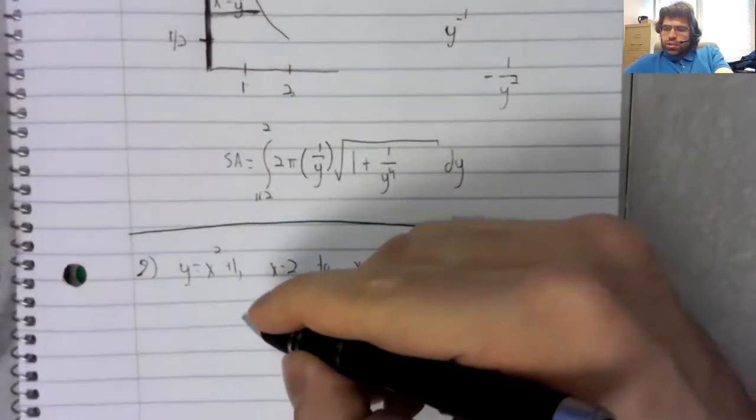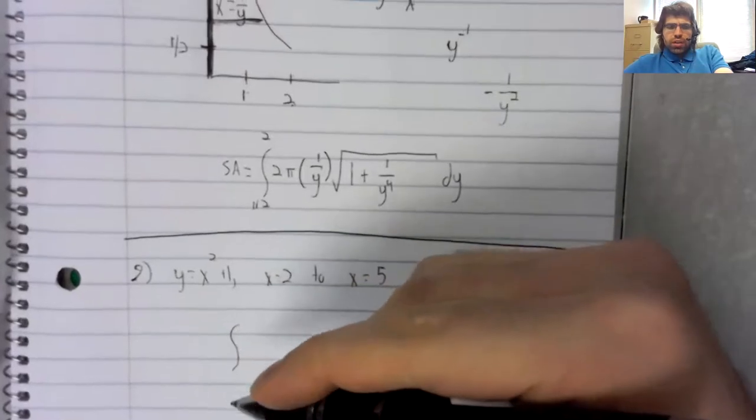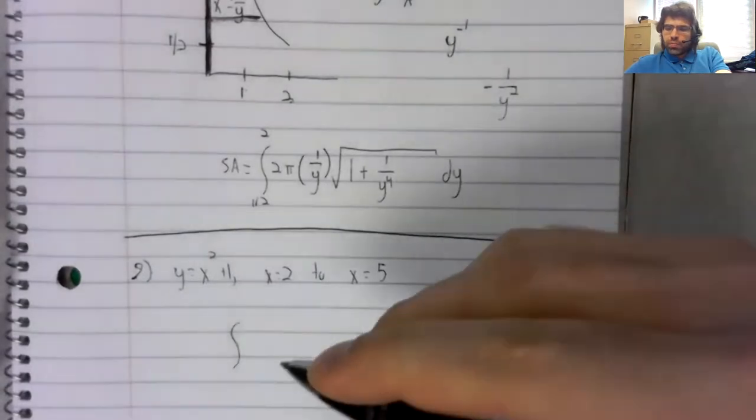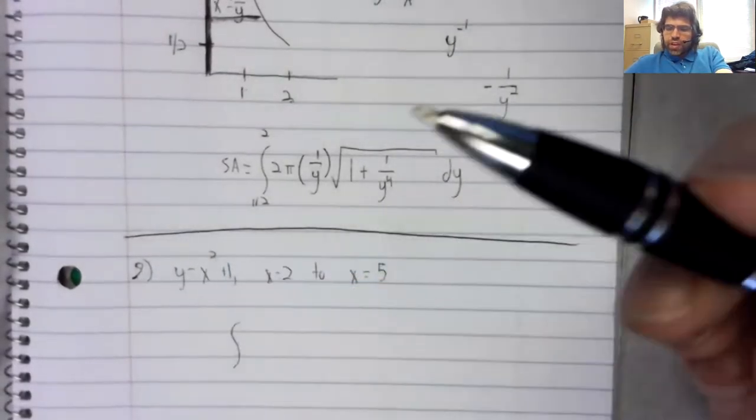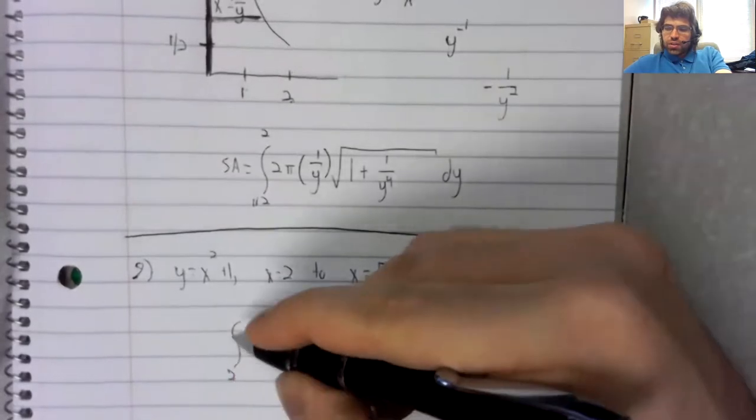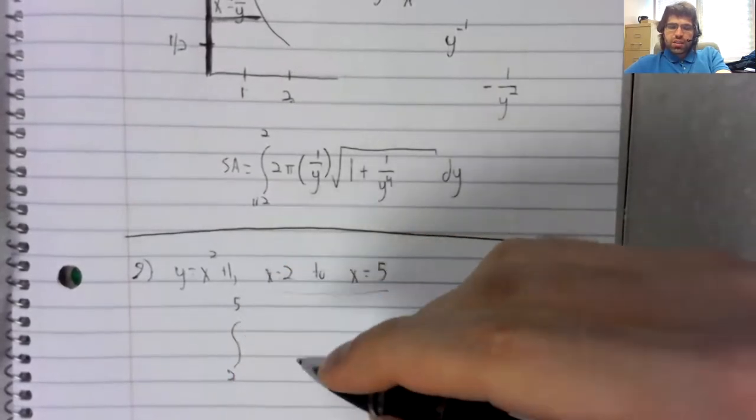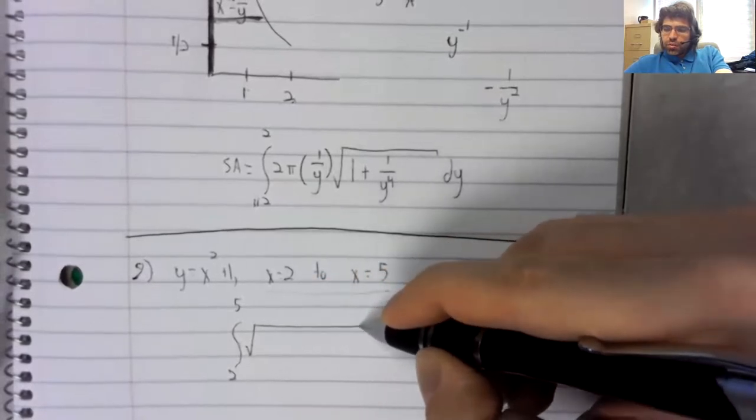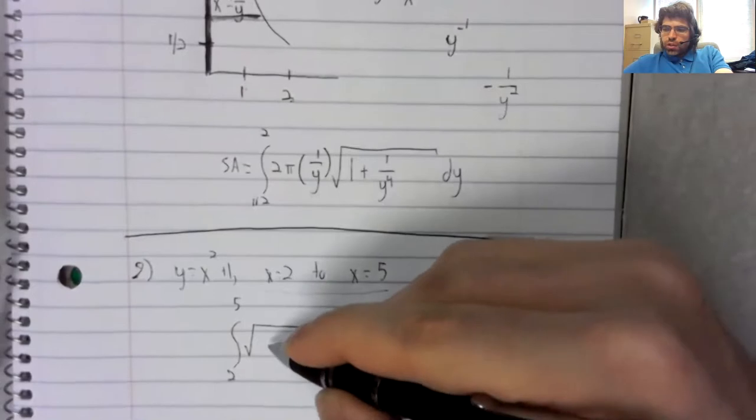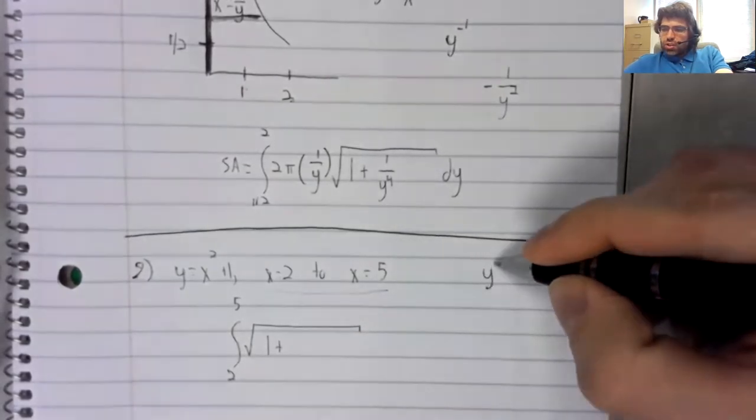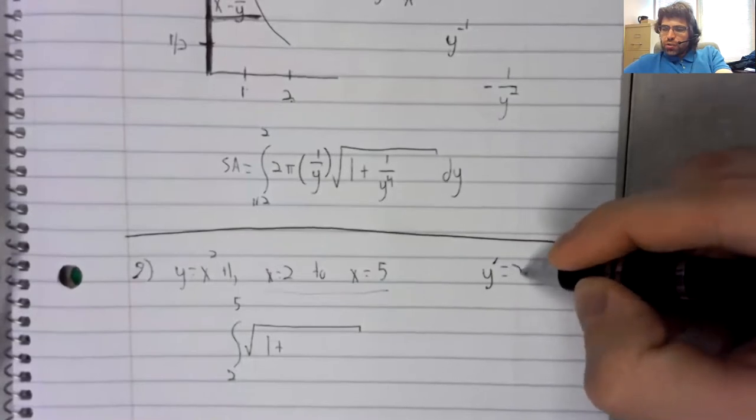There are no complications with this arc length problem. This is in terms of x, these are in terms of x, everything's in terms of x. And the formula is 1 plus the derivative squared.